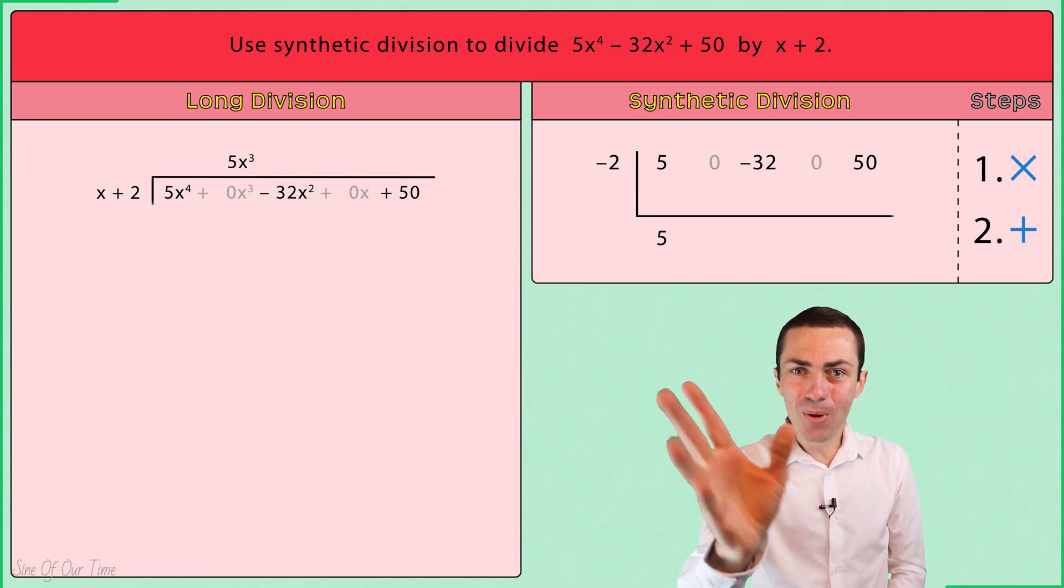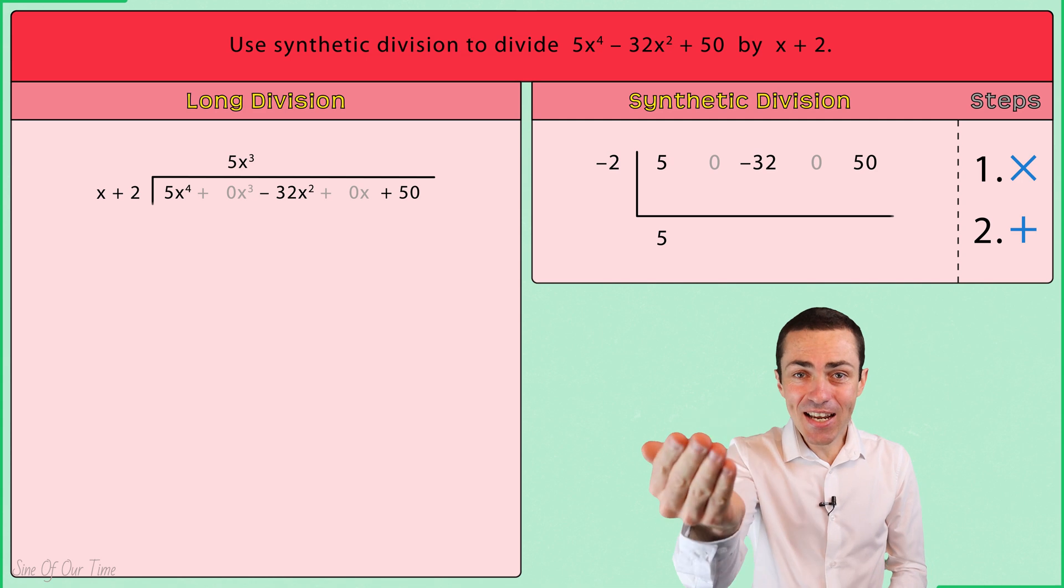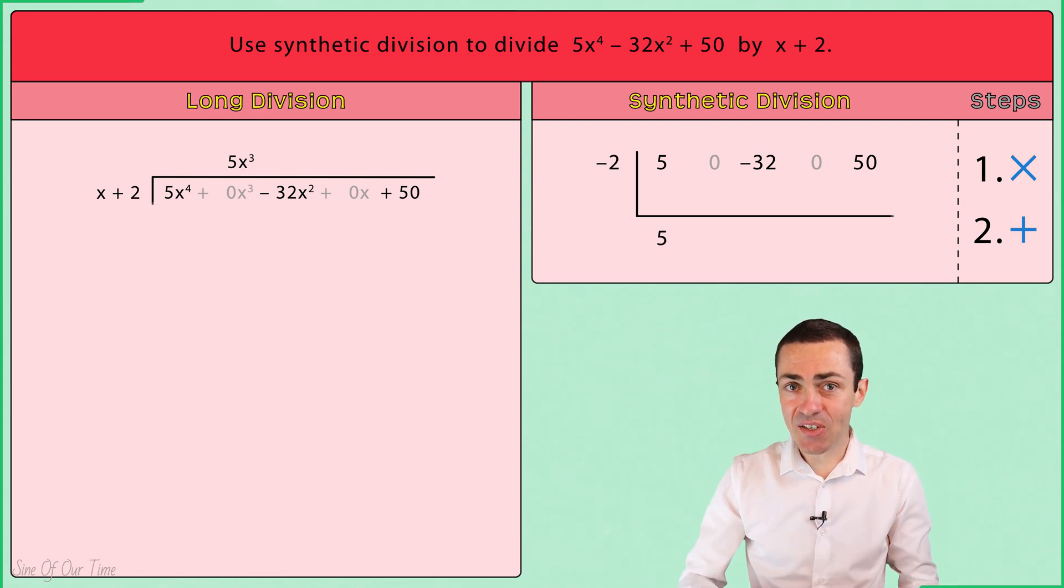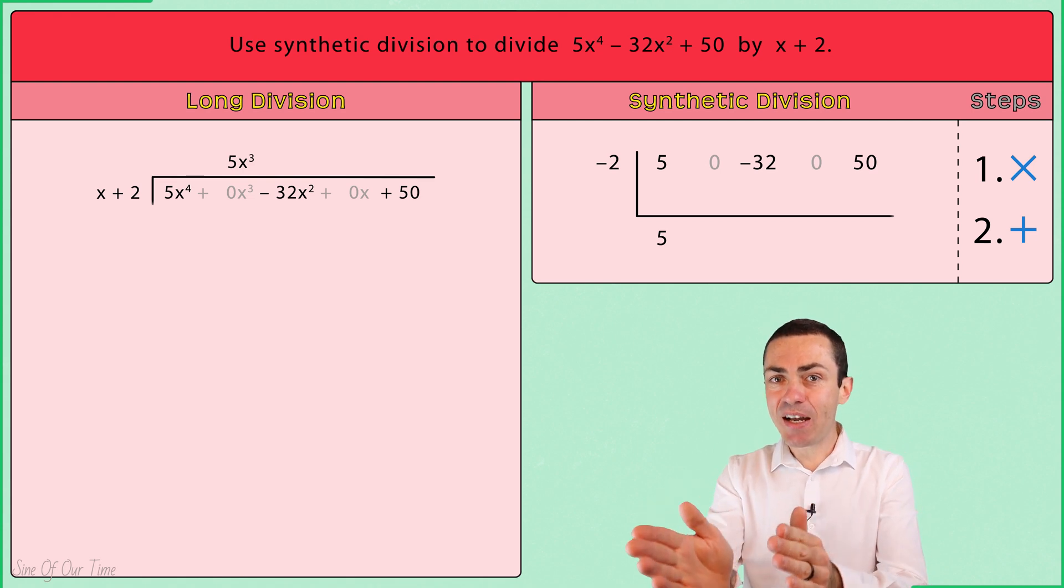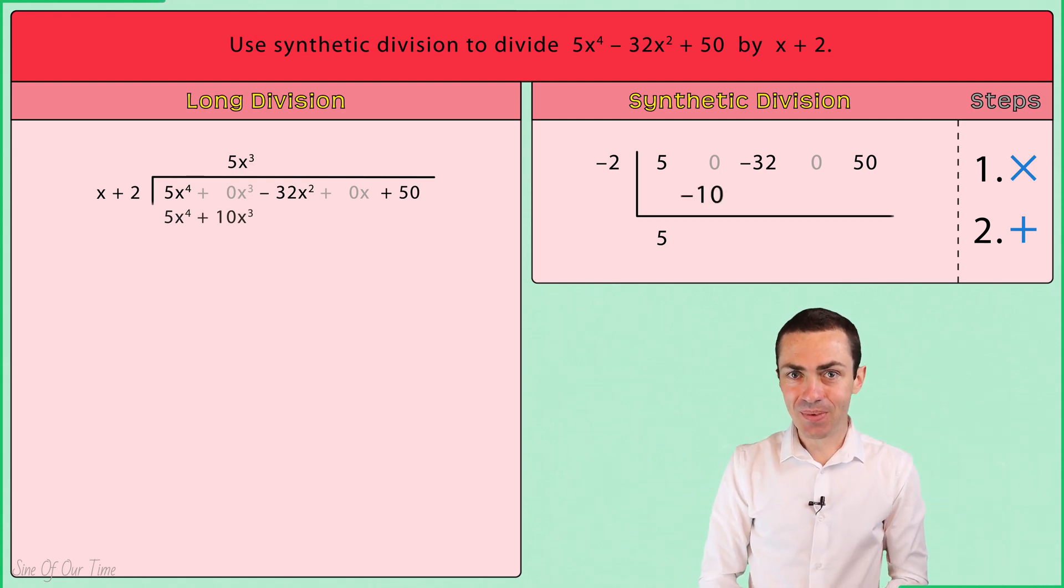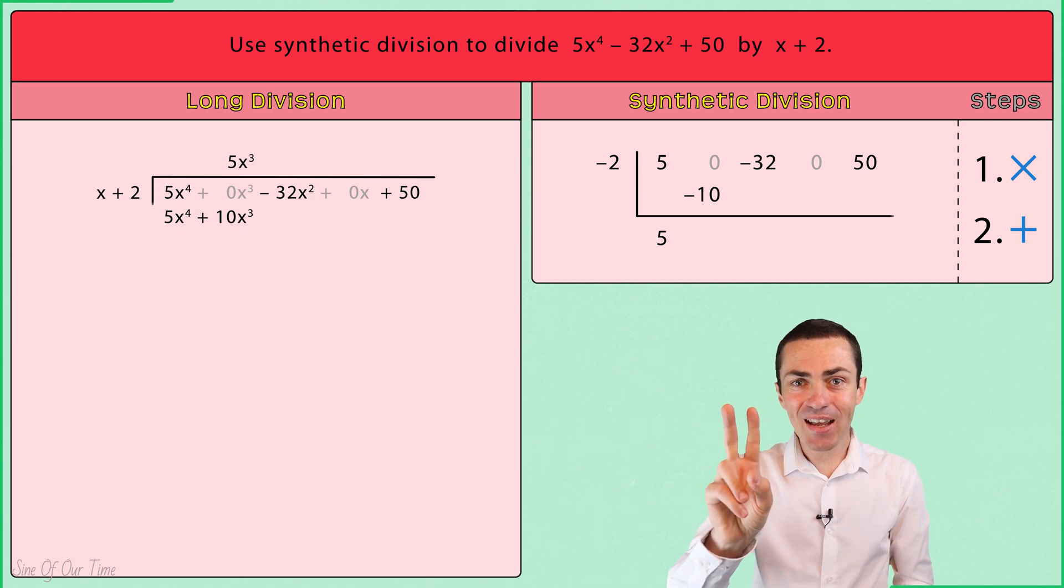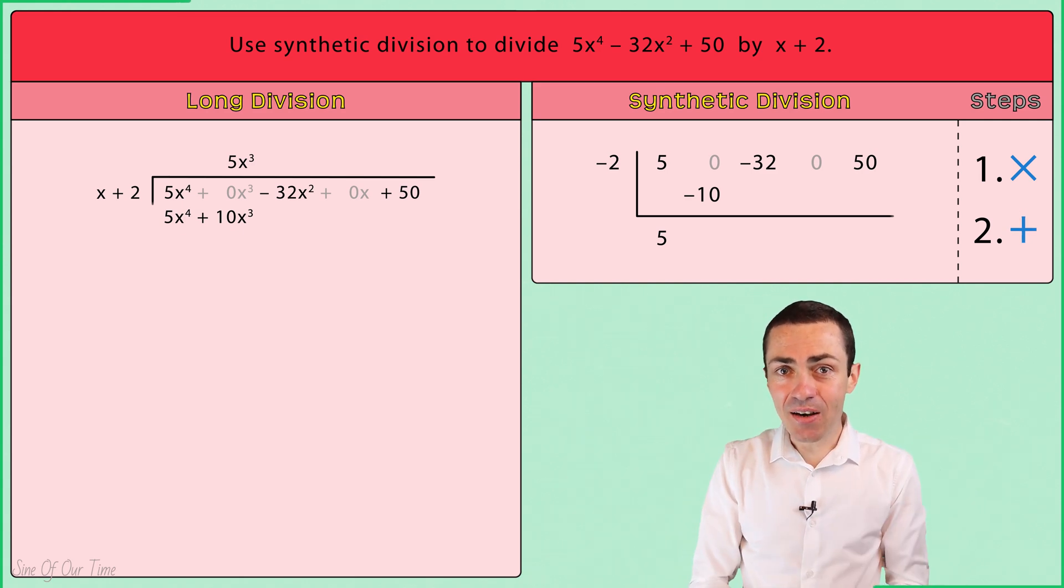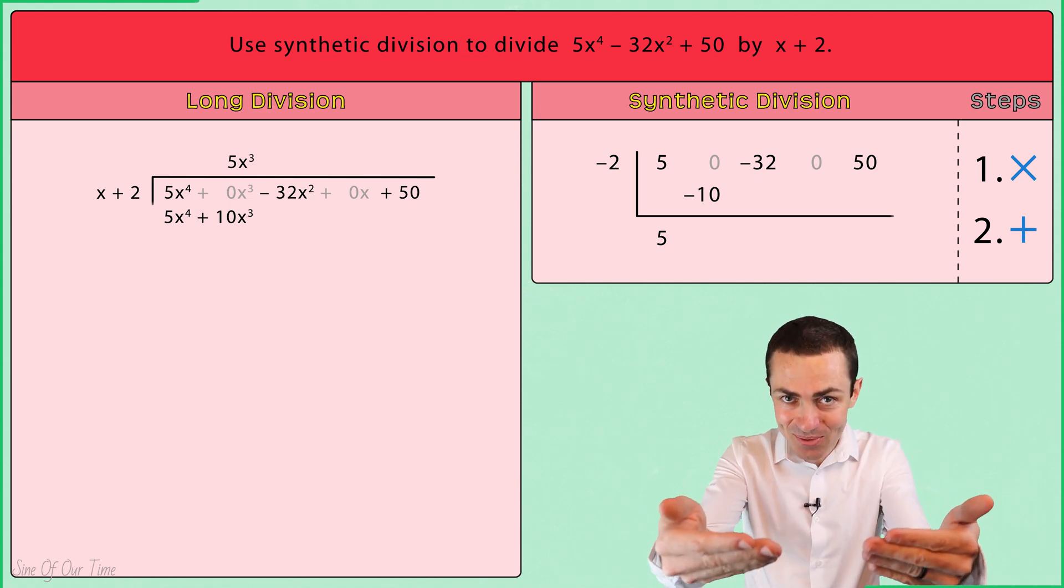Step one, multiply. We take the negative 2 and we multiply it by the 5 in order to give us negative 10, which we write one column over below the zero. Then step 2, add. We take 0 and we add negative 10 in order to give us negative 10.